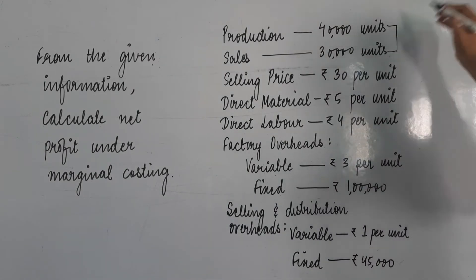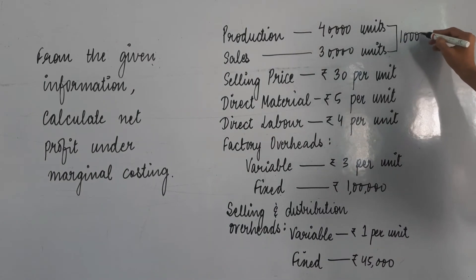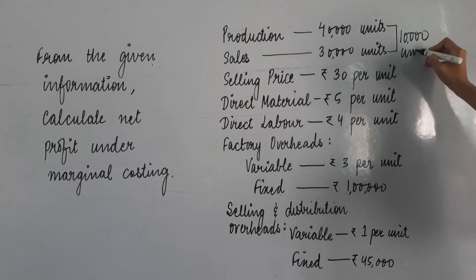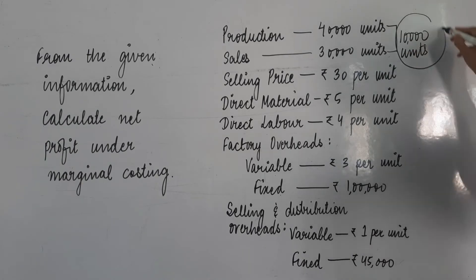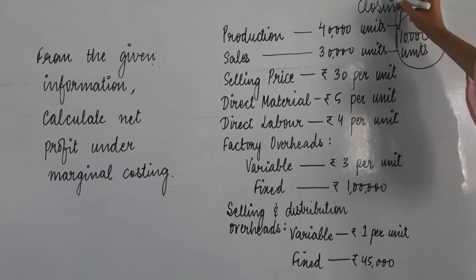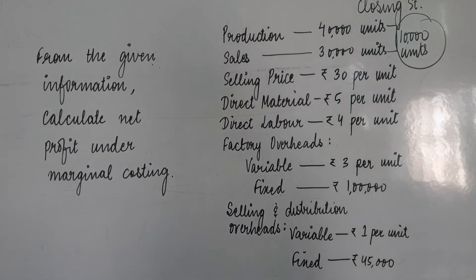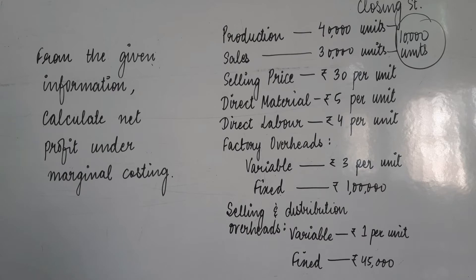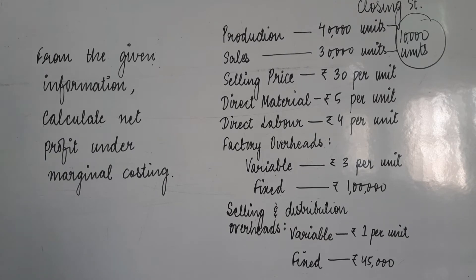We have produced 40,000 but we have sold only 30,000. They are saying ki we have selling price of rupees 30 per unit. Aap jo bhi bech rahe ho 30,000 units ko, unka jo price hai woh 30 per unit hai.